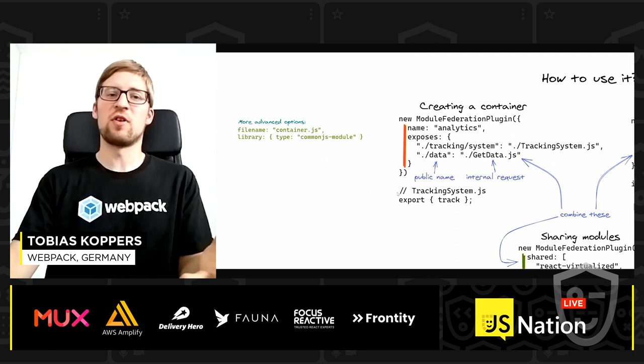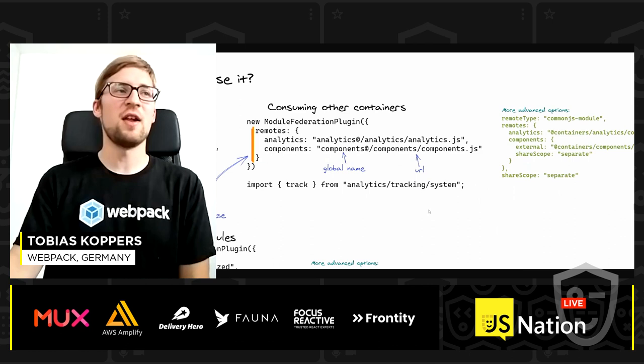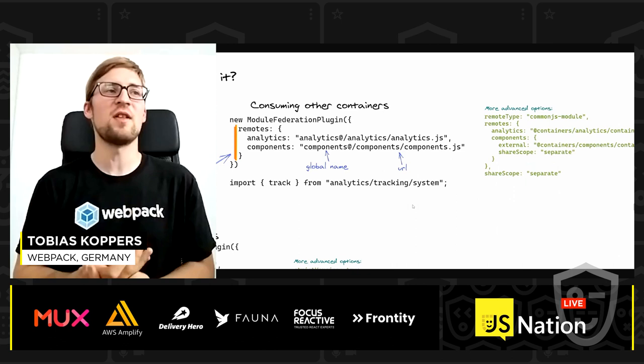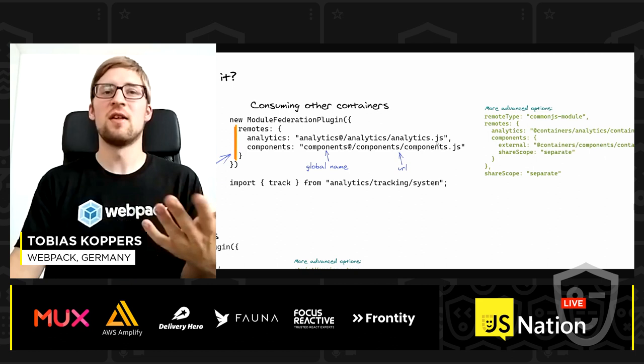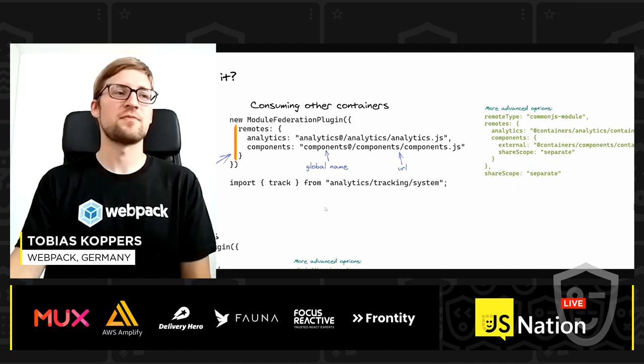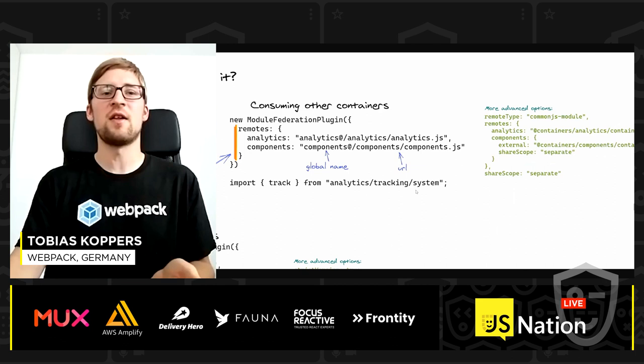To consume other containers, you use the remotes property in the plugin, giving each container a name like 'analytics' and pointing to its location — for example, loading analytics.js at runtime. To use these remote modules, you write a regular import statement prefixed with the container name, like 'analytics/tracking-system'.